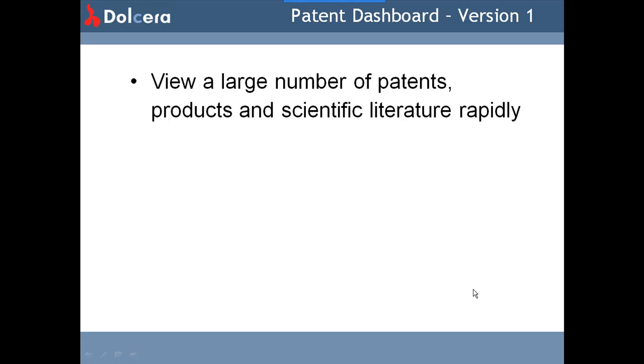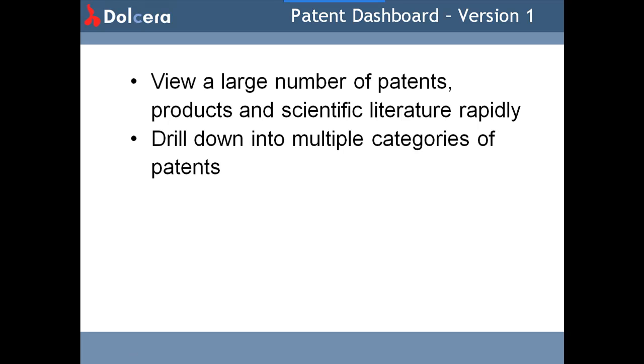First, a quick recap of what version 1 did. With version 1, you could view a large number of patents, products, and scientific literature rapidly, and drill down into multiple categories of patents.